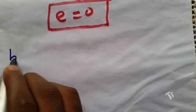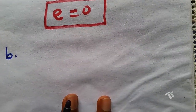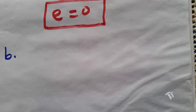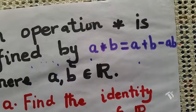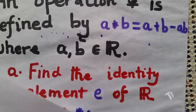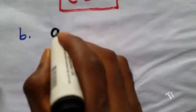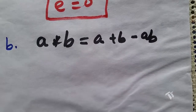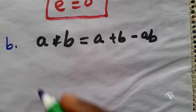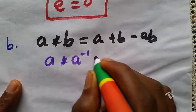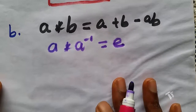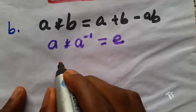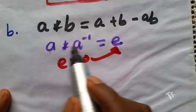Moving to part B, we need to find the inverse element. Write down the operation: a★b = a + b − ab. We know that when you operate a on its inverse you get back the identity element e. From our previous calculation, e equals 0.